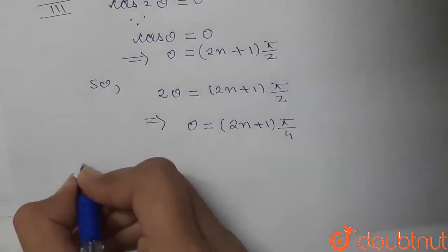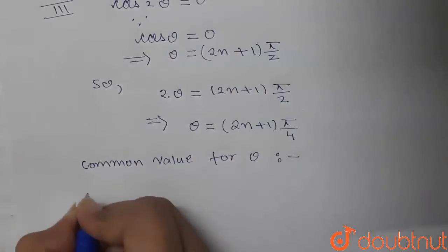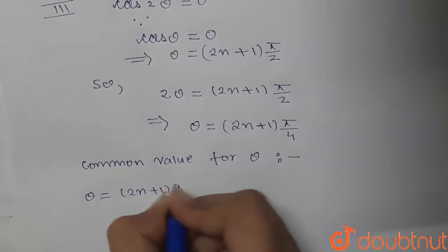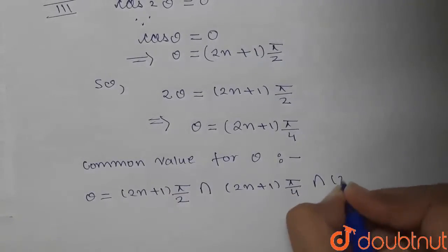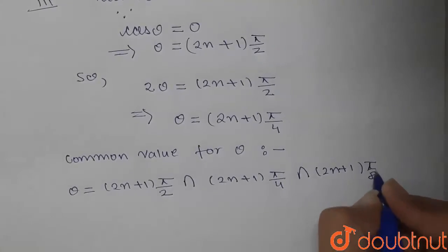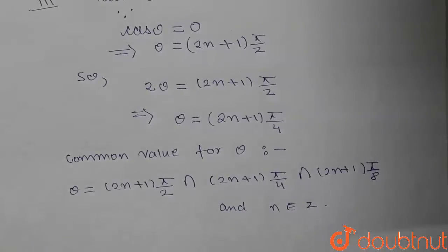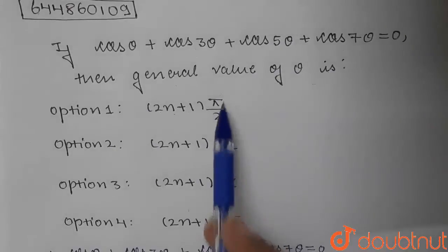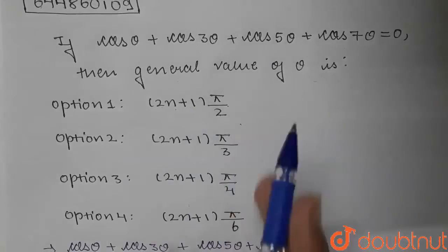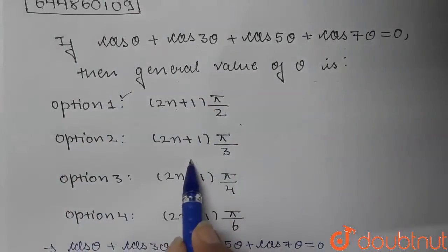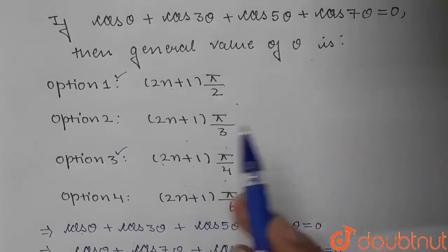The common values for θ are: (2n+1)·π/2, (2n+1)·π/4, and (2n+1)·π/8, where n belongs to the integers. Looking at the four options, we can match: θ = (2n+1)·π/2 matches the first option, and θ = (2n+1)·π/4 matches the third option. The value (2n+1)·π/8 is not present among the options. So two of the four options are correct.